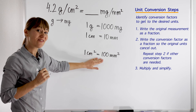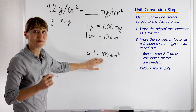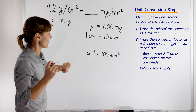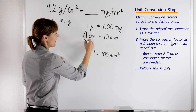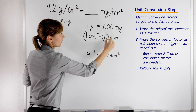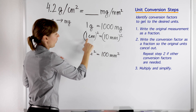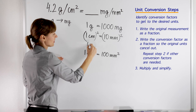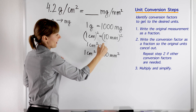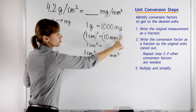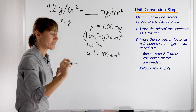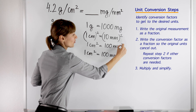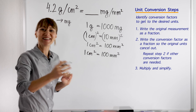But you may not have this conversion factor, so we can derive it. All you do is raise to the second power. So, 1 centimeter squared equals 1 square centimeter, and 10 squared means 10 times 10, so you will have 100 millimeters squared. Now we are ready to go.